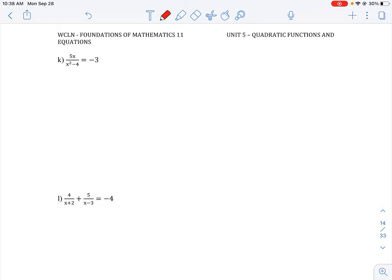All right, so let's take a look at this question here, number k, where we have a fraction equal to a value here. So what we need to do in this case is we need to remove the denominator by easily just doing a step where we cross multiply over the equal sign.